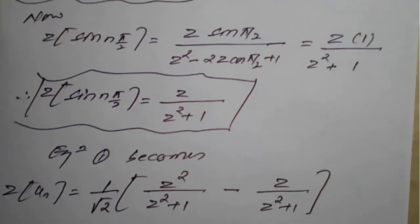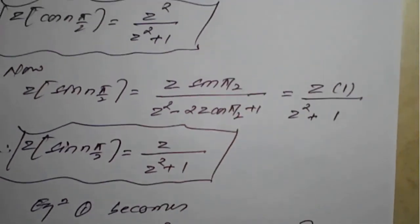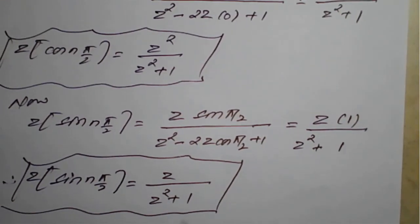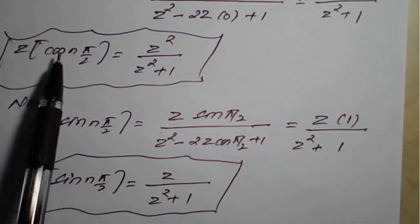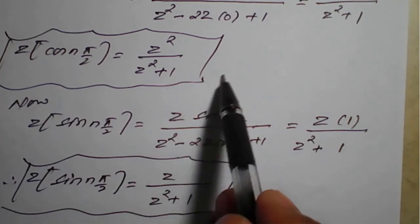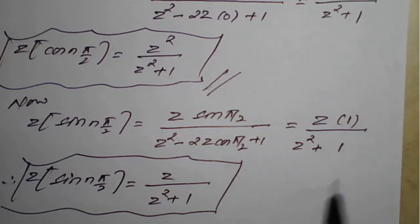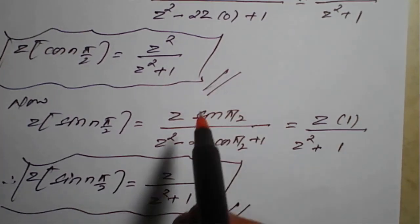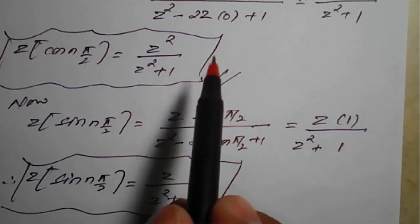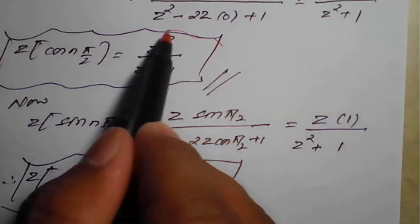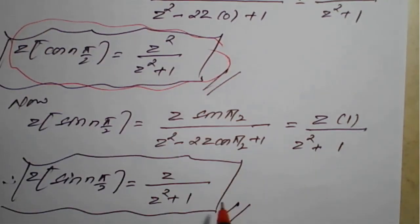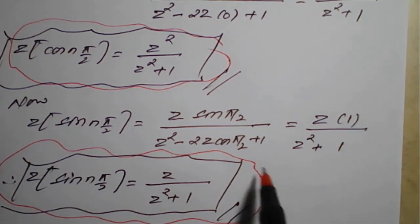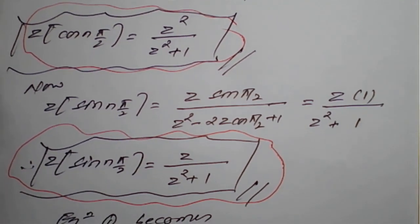Note that the intermediate results — Z{cos(nπ/2)} = z²/(z² + 1) and Z{sin(nπ/2)} = z/(z² + 1) — are themselves important standard results that you can list and apply directly in future problems.